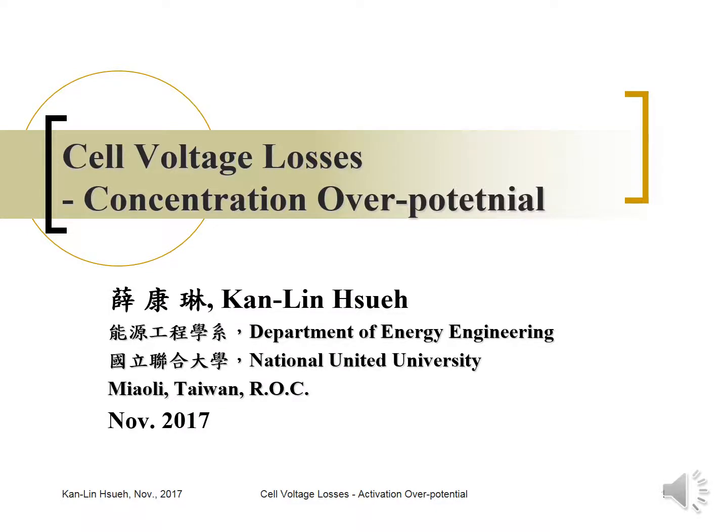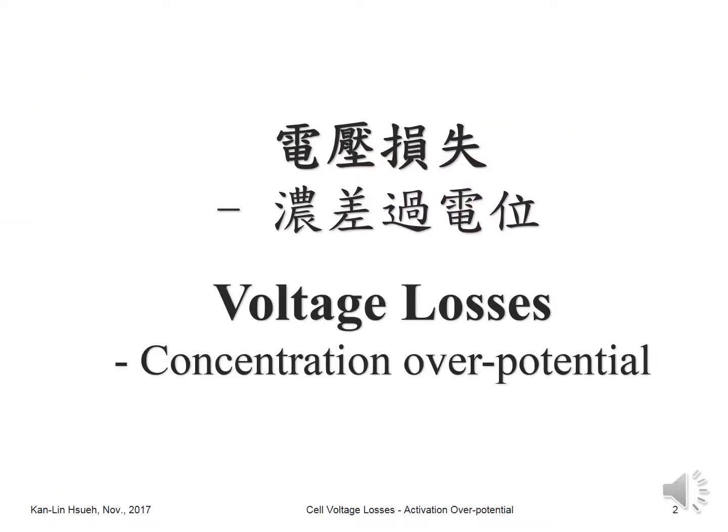Hi, this is Kenny speaking from the Department of Energy Engineering, National United University. In this unit, we're going to talk about the cell voltage loss due to the concentration overpotential. The concentration overpotential occurs because there's a concentration difference inside the electrode or on the electrode surface, making the cell voltage or electrode potential differ from its ideal case, causing a voltage loss.